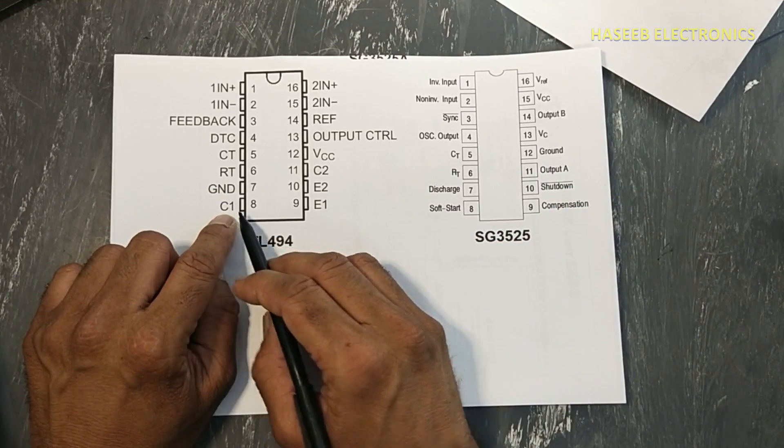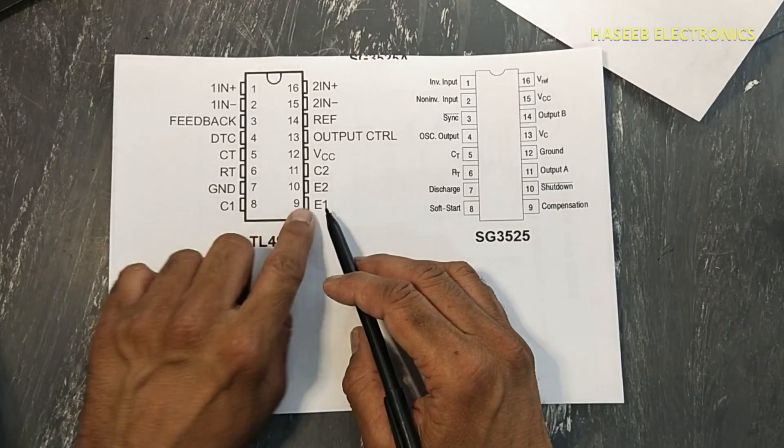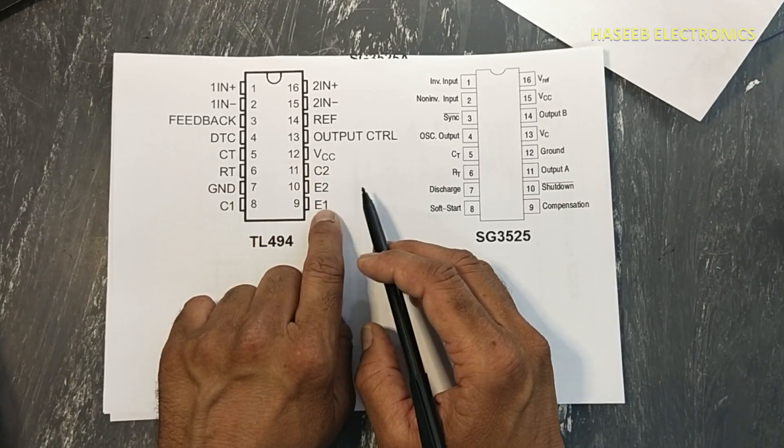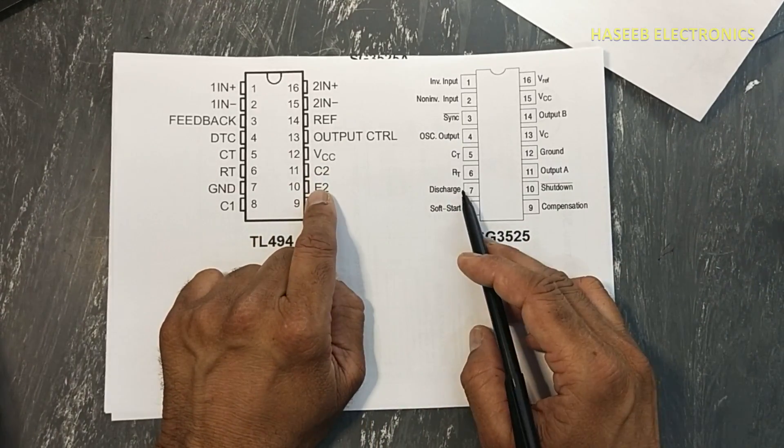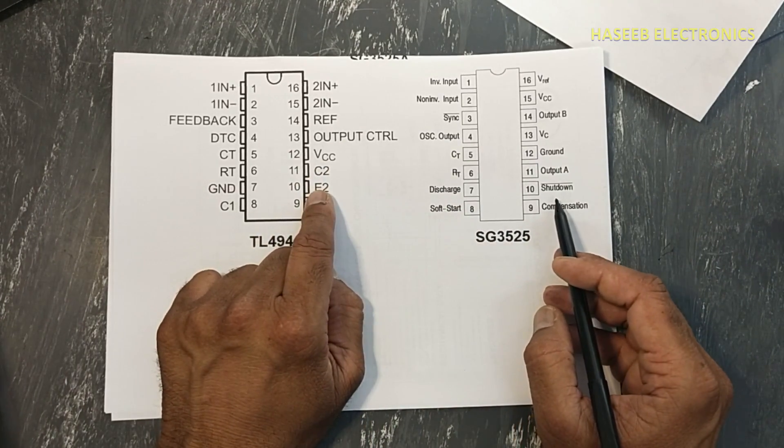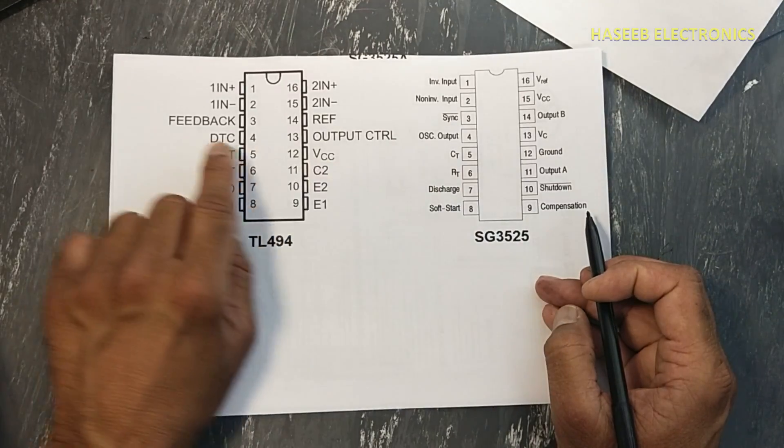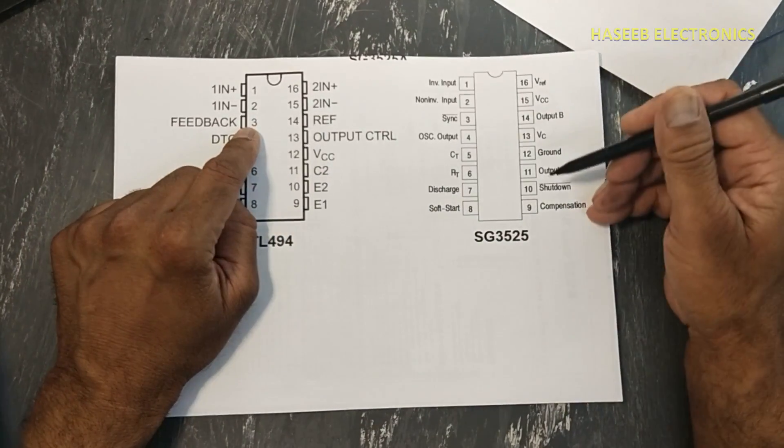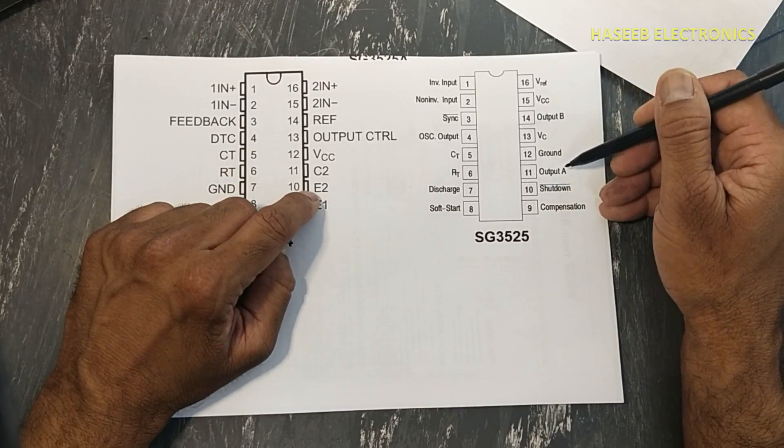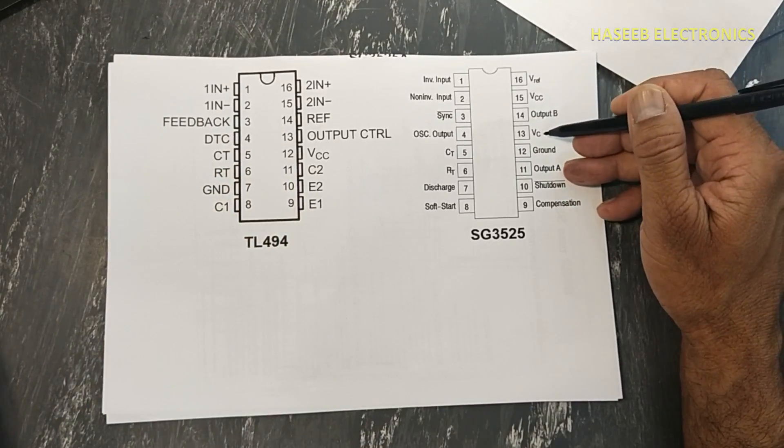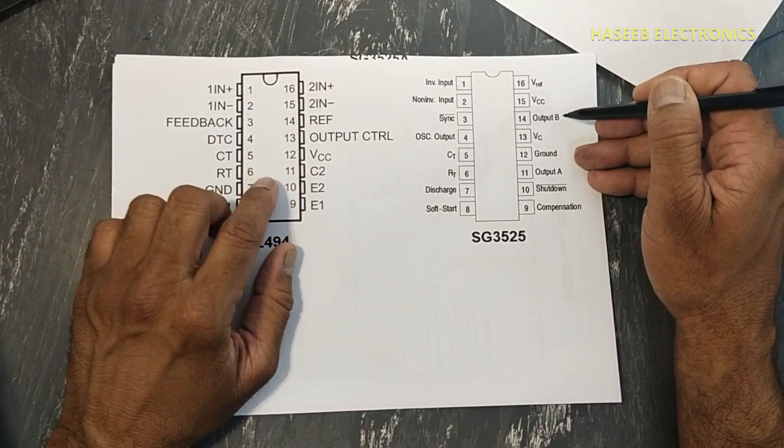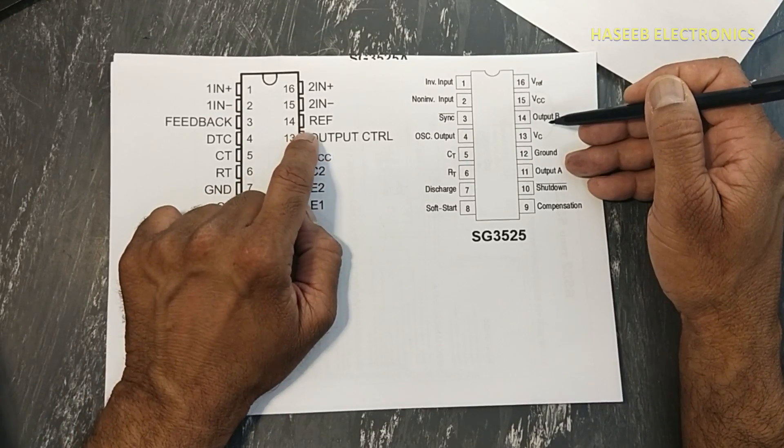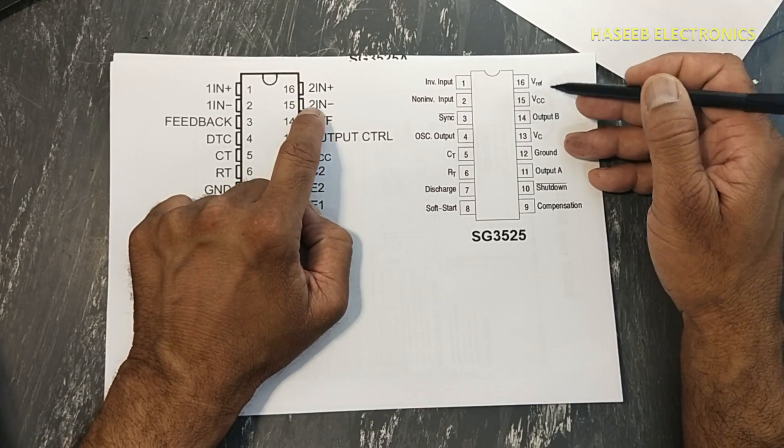Here is C1, collector number one, collector number two, emitter number one, emitter number two. But here pin configuration is different. Pin number nine here compensation; here pin number three is compensation. Then we have shutdown pin here, output A, ground, VC collector voltage, output B, V reference, output control, then inverting and non-inverting inputs.